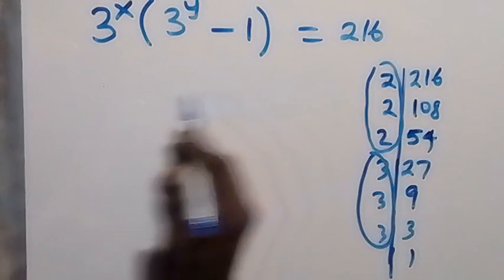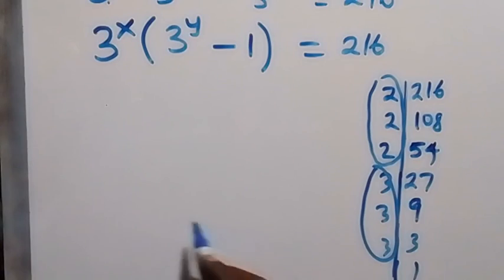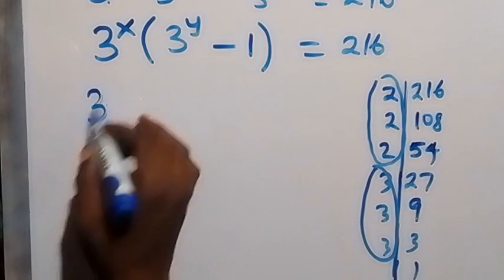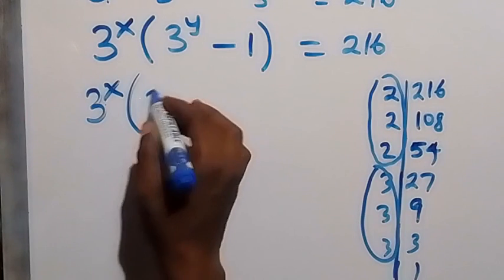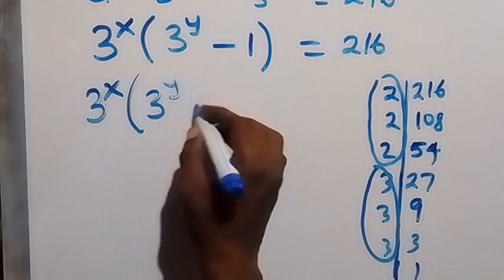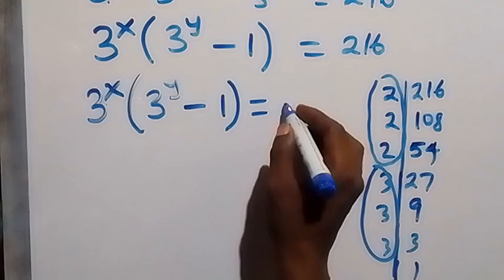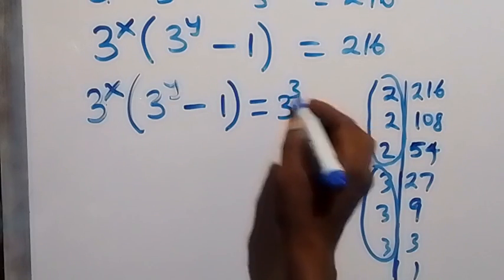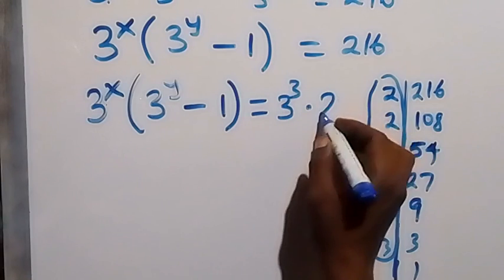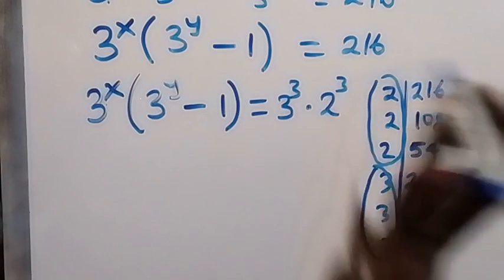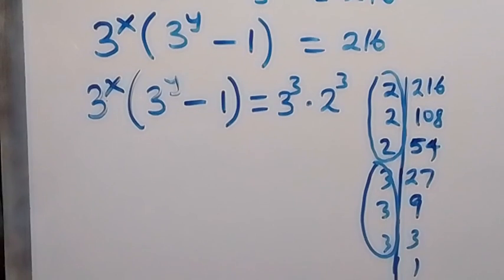Instead of writing 216, we now write the equation as: 3 raised to power x multiplied by (3 raised to power y minus 1) equals 3 raised to power 3 multiplied by 2 raised to power 3.